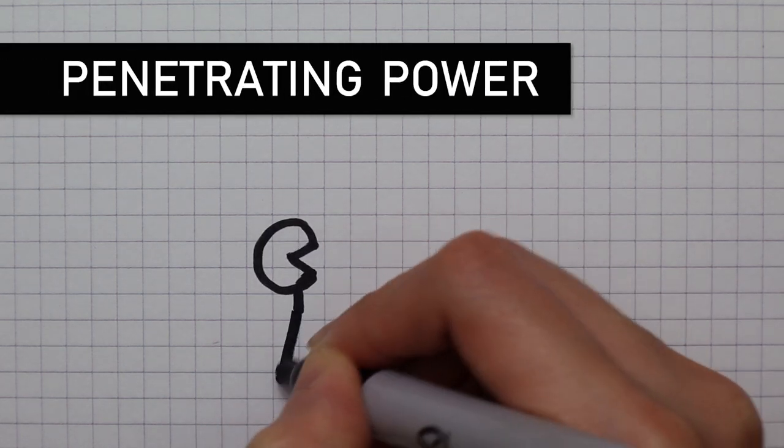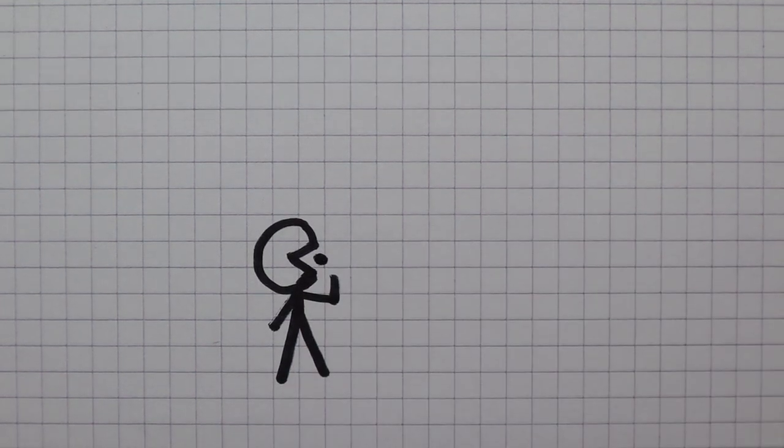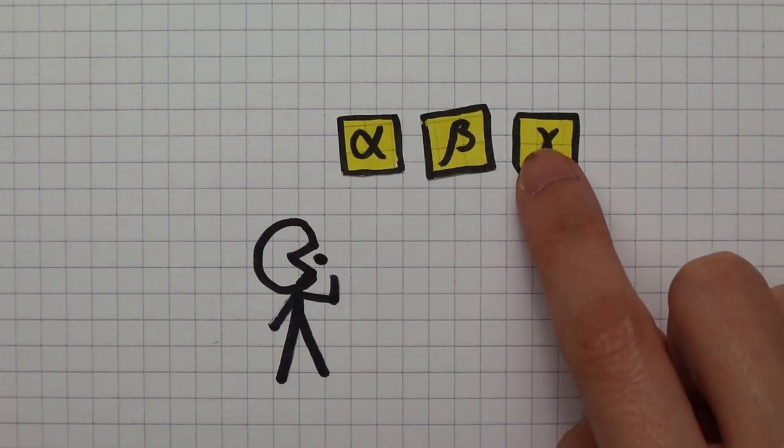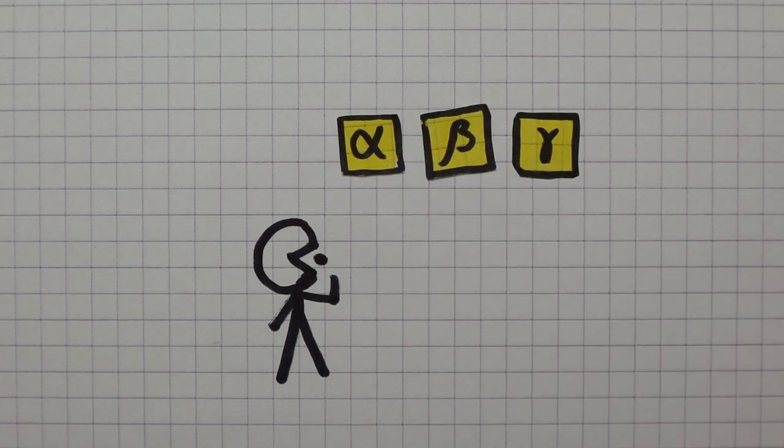What is the best worst case scenario to swallow a source emitting alpha radiation, beta radiation, or gamma radiation? Let's find out.